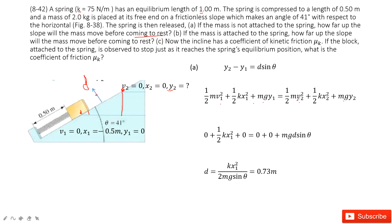We input the known quantities: v1 is 0, y1 is 0, v2 is 0, and x2 is 0. For y2, since y2 minus y1 equals d sine theta and y1 is 0, we get y2 equals d sine theta. Substituting this in, the equation becomes much simpler, and we can solve for d — the answer is 0.73 meters.